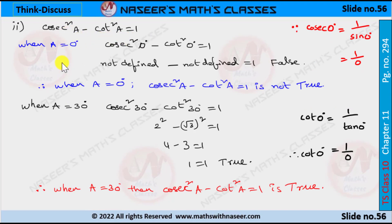Now we check the second identity: cosec²a − cot²a = 1. When a = 0°, it is written as cosec²0° − cot²0° = 1. However, cot0° is not defined, so this case is undefined.